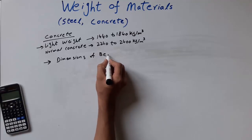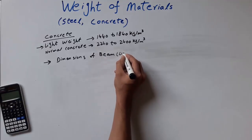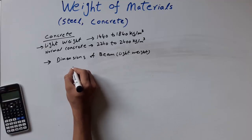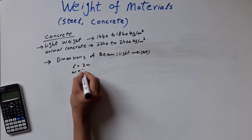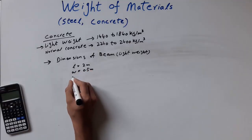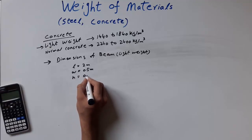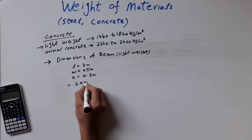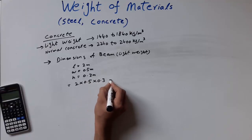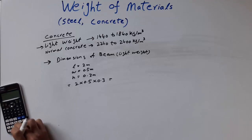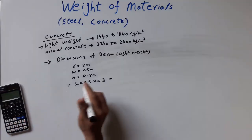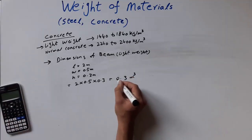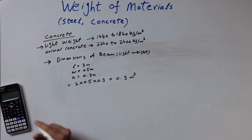The dimensions of the lightweight beam are: length is equal to 2 meters, width is equal to 0.5 meters, and height is equal to 0.3 meters. Calculate the volume: 2 multiplied by 0.5 multiplied by 0.3 gives 0.3 cubic meters. Volume always has units of cubic meters.